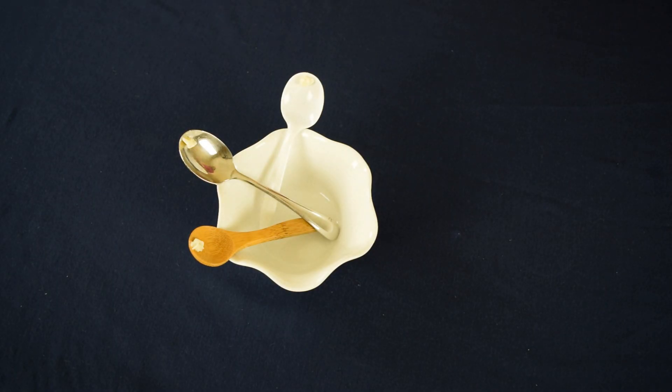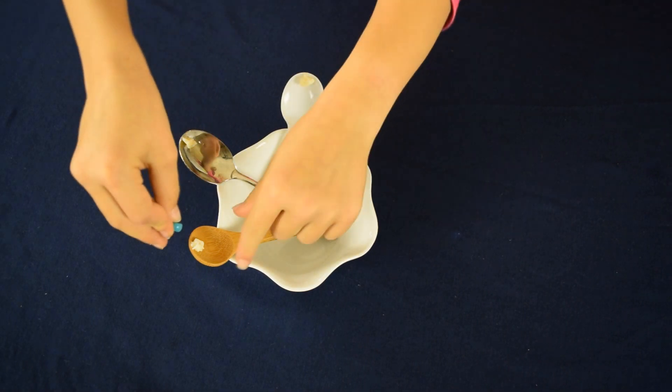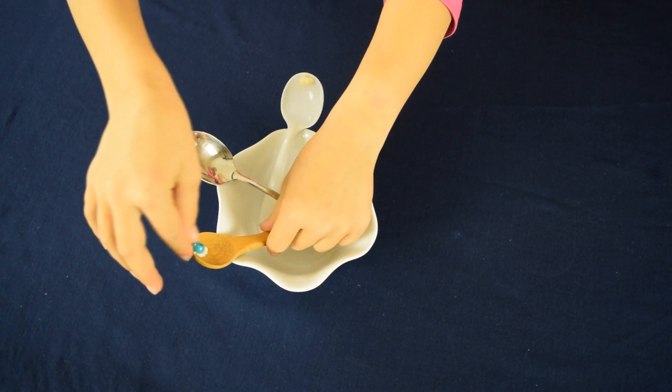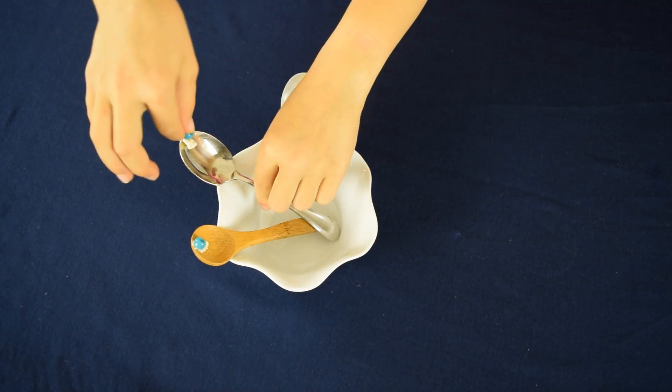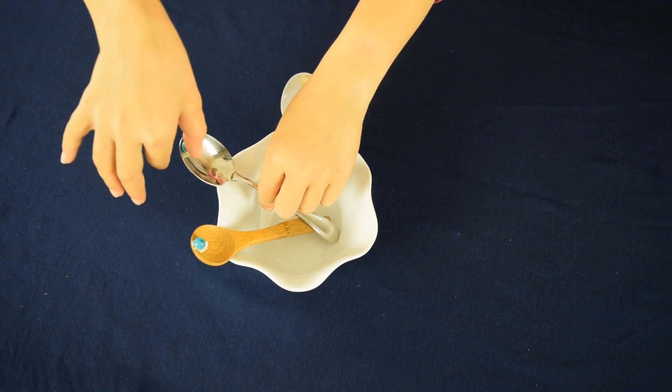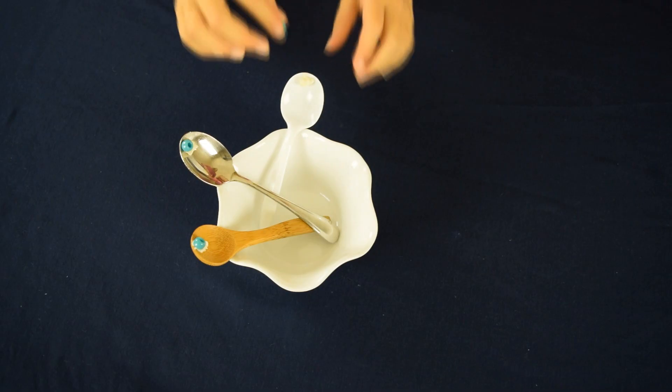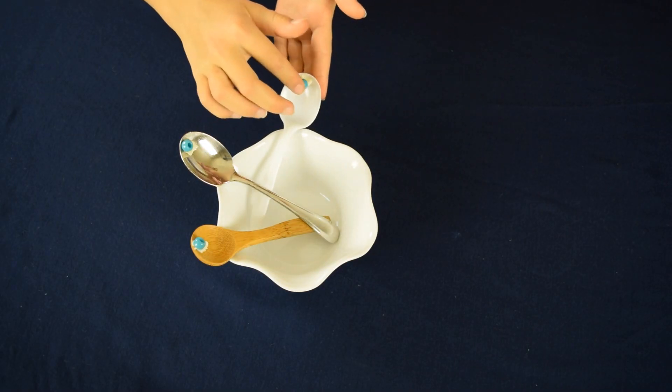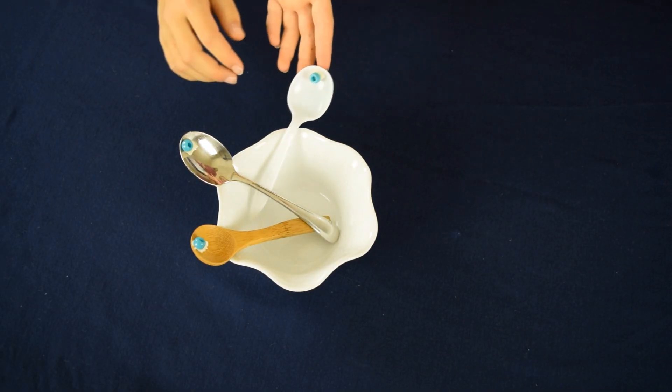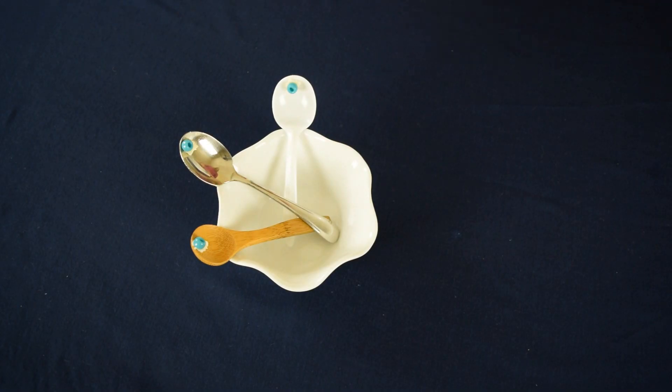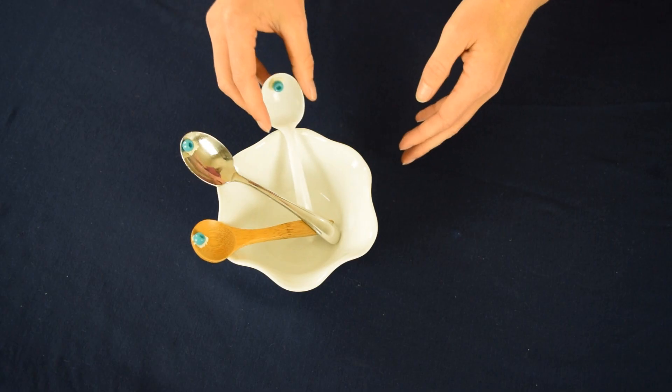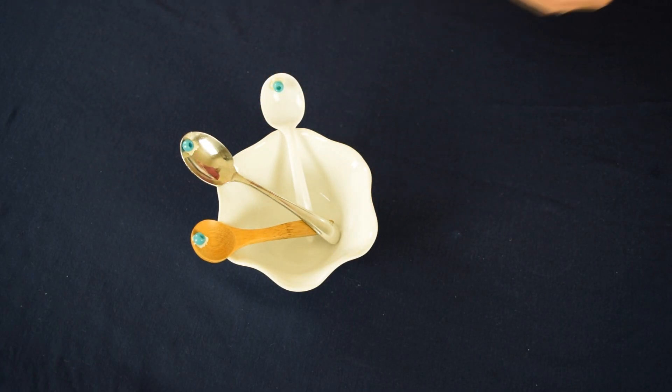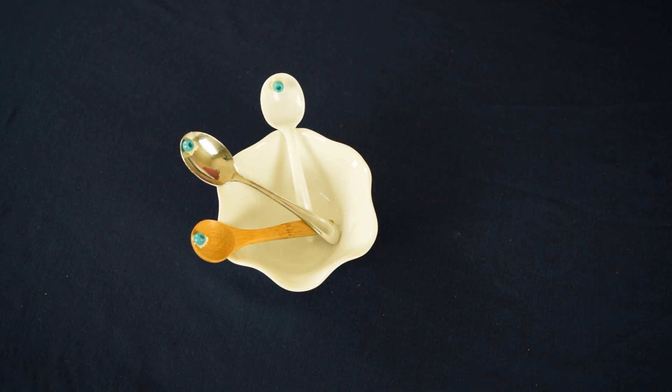So once you have the butter on the spoons, you're going to put a bead in the butter on each of the spoons as well. Then after you have the beads and the butter on the spoons, you're going to straighten out the spoons so they're all laying evenly. And now it's time to move to the next step.